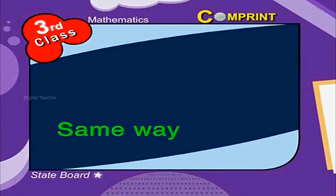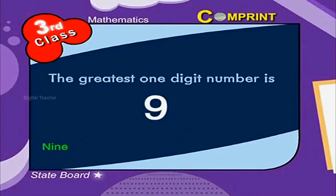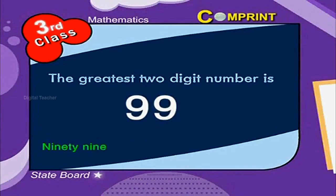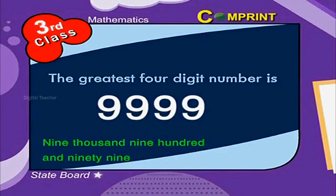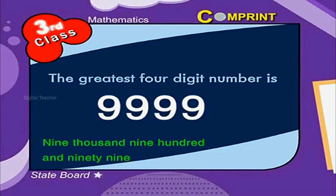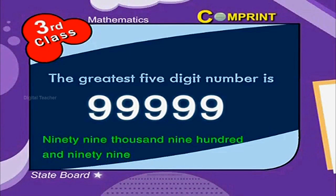In the same way, the greatest 1-digit number is 9. The greatest 2-digit number is 99. The greatest 3-digit number is 999. The greatest 4-digit number is 9,999. The greatest 5-digit number is 99,999.